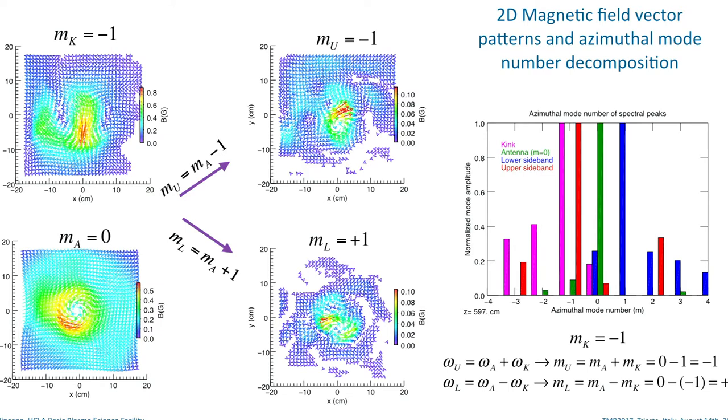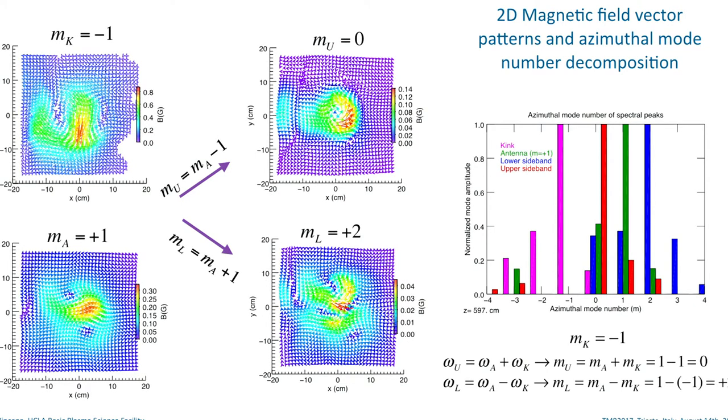You can see the two current channels that are formed here. That's an M equals one structure. If we do a decomposition in Fourier space, we can see that primarily the lower mode, which is in blue, the upper is in red. The lower band indeed has the plus one mode number. The driver is fixed at M equals zero. The kink mode is primarily at M equals minus one. There's some other components. And the upper mode is at minus one. So it satisfies these M number matching conditions.